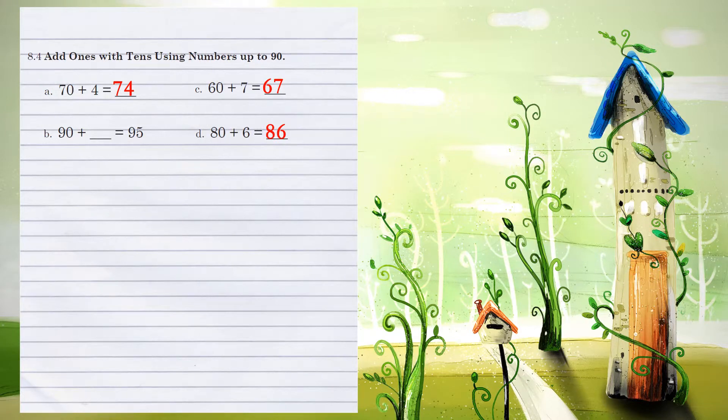Example B, 90 plus what number equals 95? Again, since the 9s are the same, we're looking at the 1s. How would I get from 0 to 5? We're adding 5.